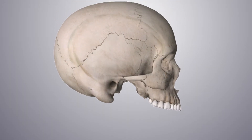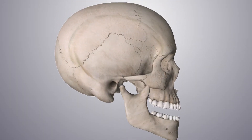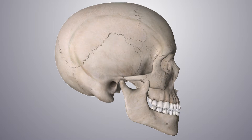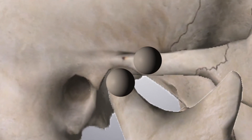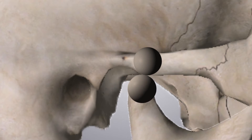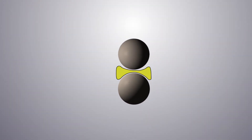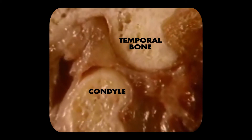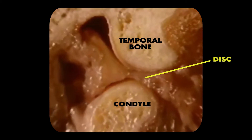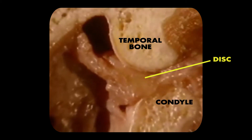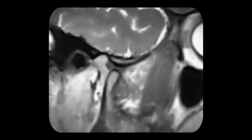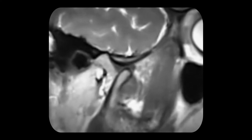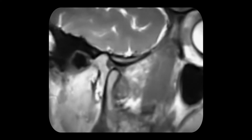The bottom of the skull is like a ball where it articulates, and the top of the jaw is a ball. Is a ball on a ball a stable surface? No. So the disc is concave superiorly and concave inferiorly, and that provides stability to both surfaces. Normally the disc travels along with the condyle. When you first open, there's a rolling phase during about 40 to 50% of motion, and then the condyle glides anteriorly with the disc on top.